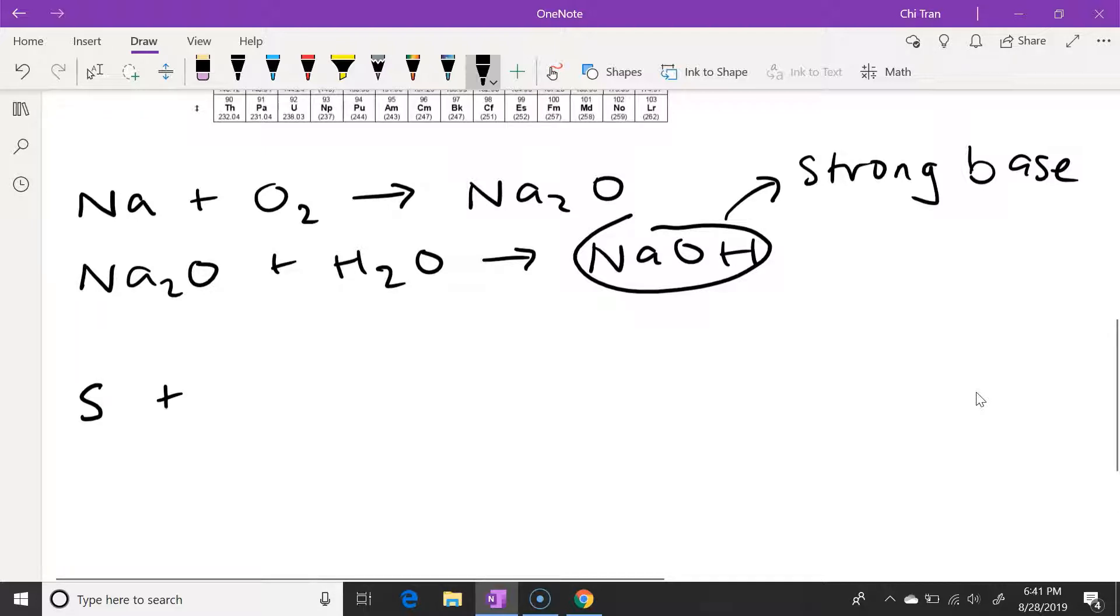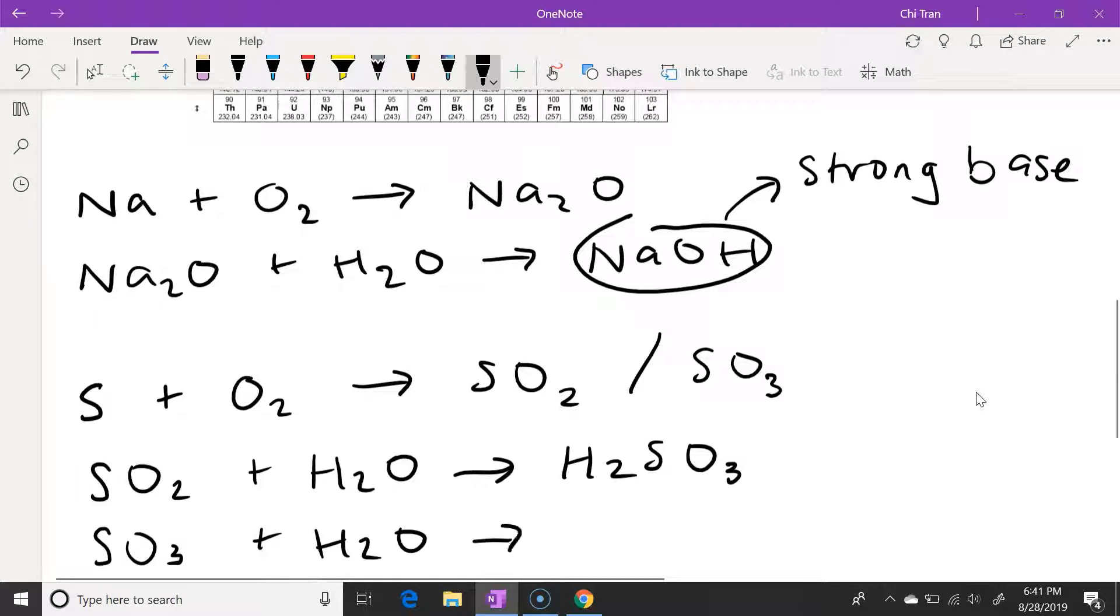Now let's take a look at sulfur as our non-metal example. So when sulfur is added into oxygen, we get sulfur oxide, which can appear in the form of SO2 and SO3. And when either of these sulfur oxides is added into water, we get sulfuric acid in the form of H2SO3 or H2SO4. And both of these sulfuric acids are strong acids.